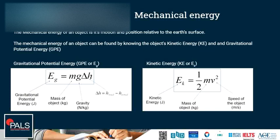Gravitational potential energy can be found by knowing the mass, the gravitational field strength of the planet we are on, which is 9.8 newton per kilogram for planet Earth, and the difference in height the object moved. If an object moves up relative to earth's surface, it increases its gravitational potential energy. If it moves down, it decreases its gravitational potential energy.